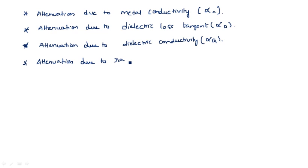The fourth loss is attenuation due to radiation. Generally when an electromagnetic signal is transmitted, radiation is present, so attenuation due to radiation is given as alpha R. These are the four losses associated with signal transmission through the microstrip transmission line, and among them these four have the highest impact — including dielectric loss tangent, attenuation due to dielectric conductivity, and attenuation due to radiation.